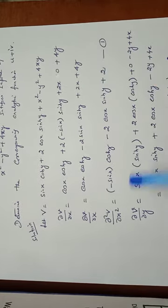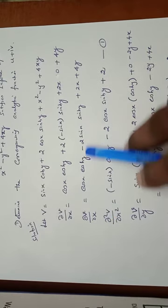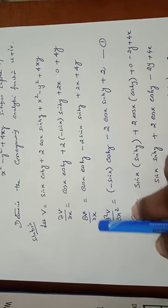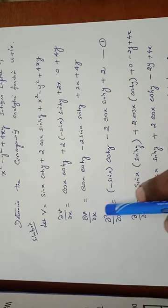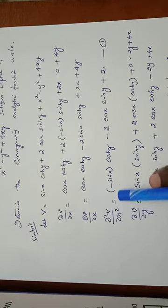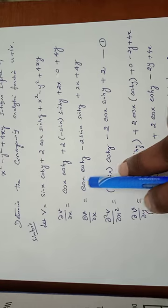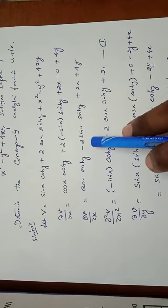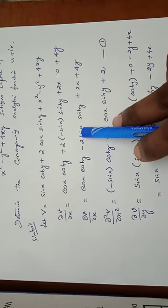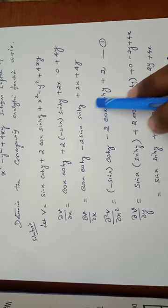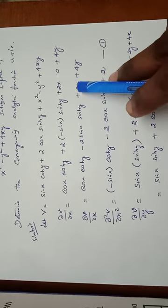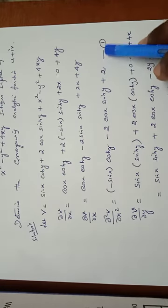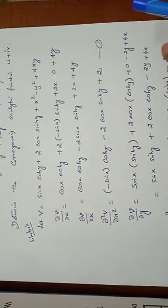Again, this function can be differentiated partially with respect to x. So ∂²v/∂x² equals: differentiation of cos x is minus sin x, cosh y is fixed; minus 2 into differentiation of sin x is cos x, sinh y is fixed; and differentiation of 2x is 2; 4y is 0. This is equation number 1.